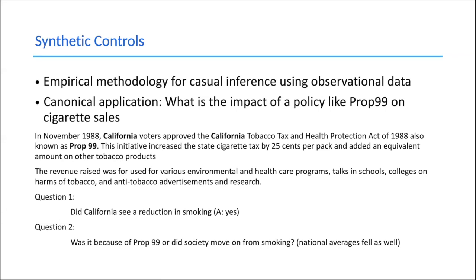First, did California see a reduction in smoking? The answer was yes — ten years later, per capita smoking had gone down. The second and more important question was: was it because of Prop 99, or did society simply move on from smoking, because national averages fell as well? In an ideal world, you would have a California with Prop 99 and a California without Prop 99 and then observe smoking rates. If you see a difference, Prop 99 made a difference; if there's no difference, Prop 99 was like a placebo.